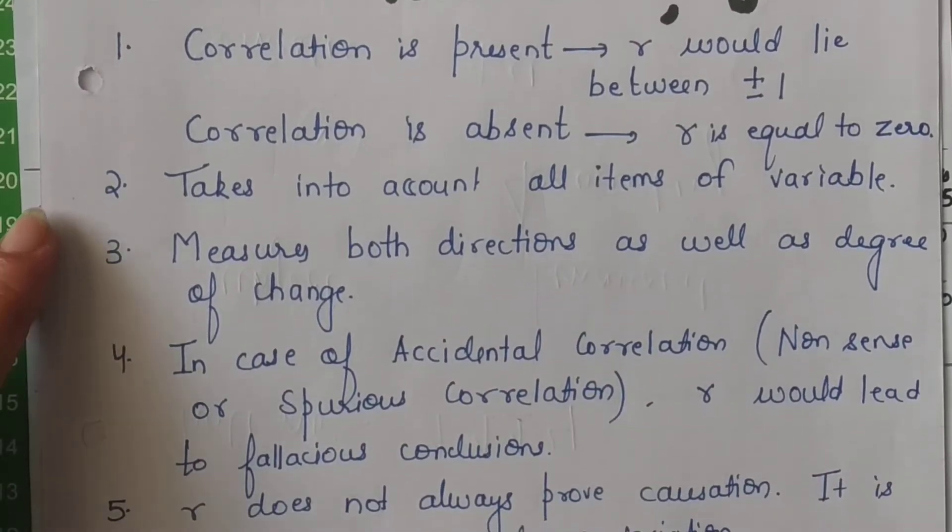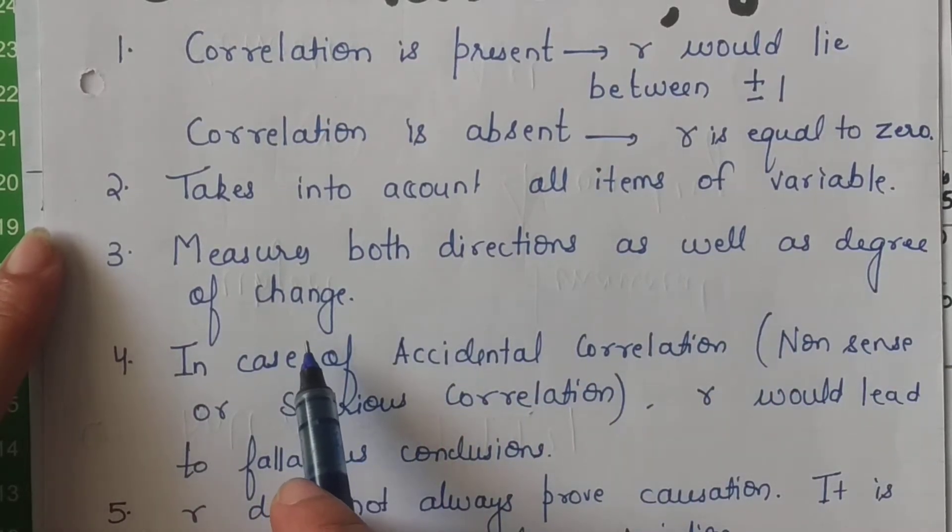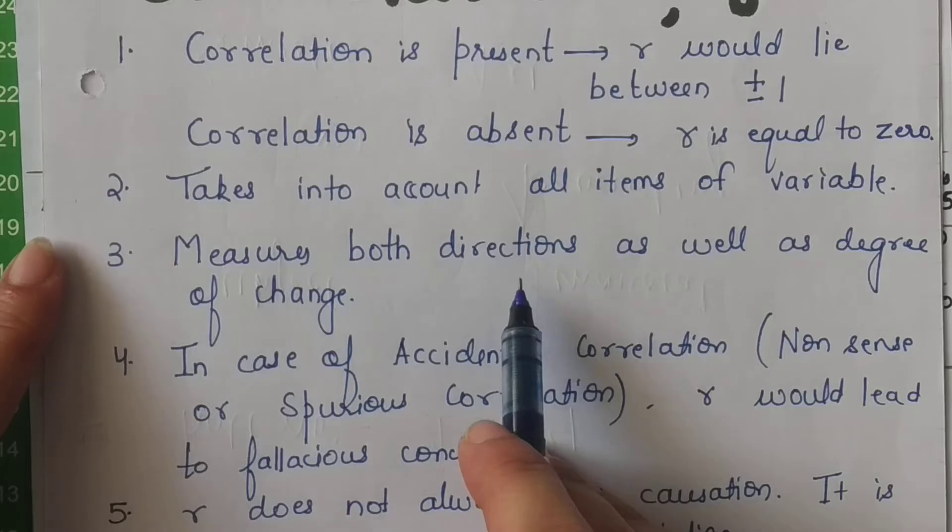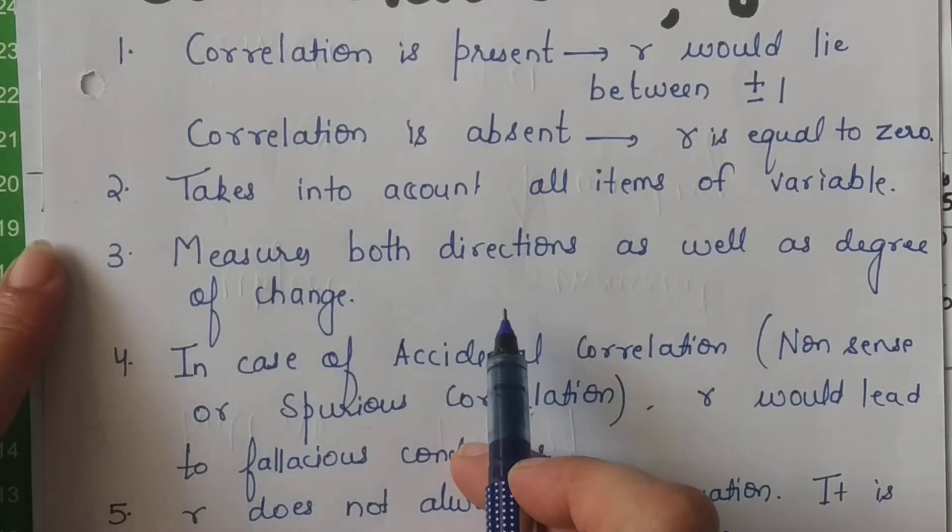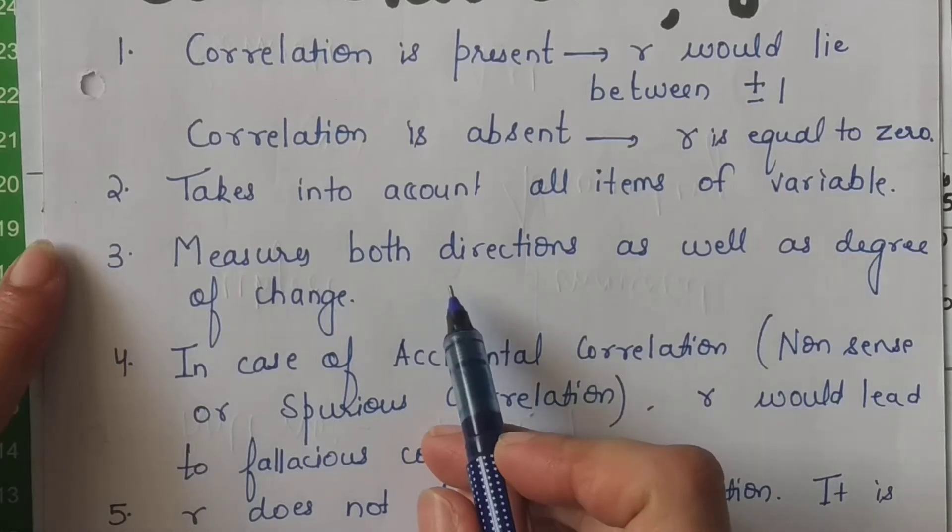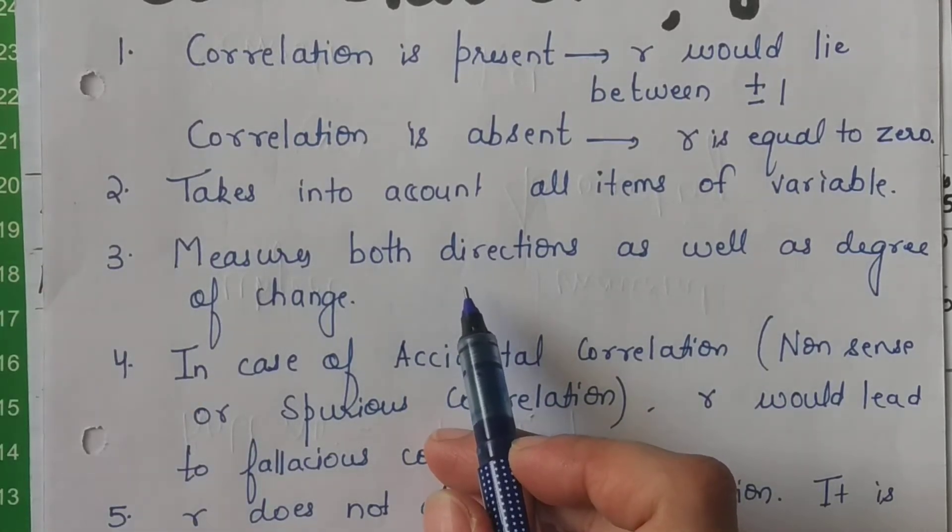Number 3: it measures both the directions as well as the degree of change. Coefficient of correlation na sirf aapko yeh batata hai ki aapke variables ke relationship ka jo slope hai, woh positive hai ki negative hai.